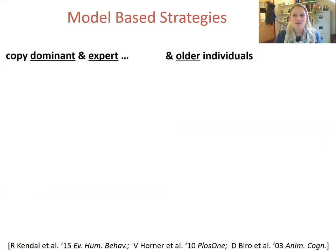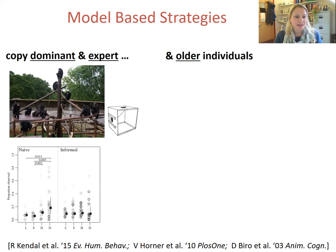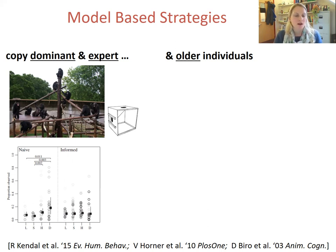In recent years, there have been several studies of potential model-based biases in the social learning of chimpanzees. I want to highlight a few — namely biases for copying dominant, expert, and older individuals — and highlight potential implications. In four groups of chimpanzees, in a study I conducted with colleagues, we trained one individual — the model — to retrieve a food reward from a puzzle box by sliding the door to the left or the right. We then gave the whole group access to the box, observed the spread of the task solution, and recorded who watched whom solving the task and whether they then slid the door to the left or right.